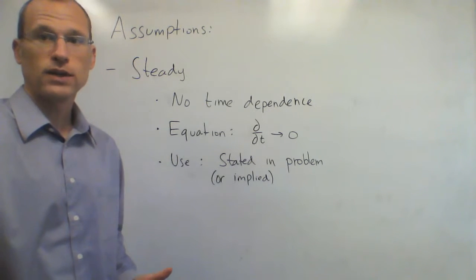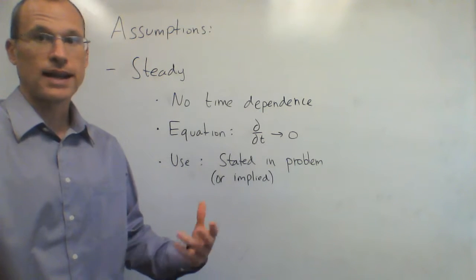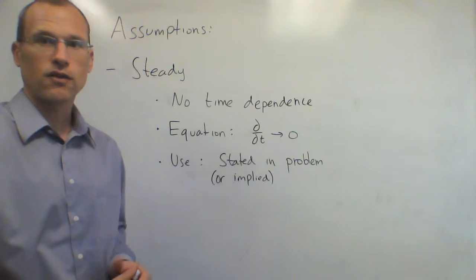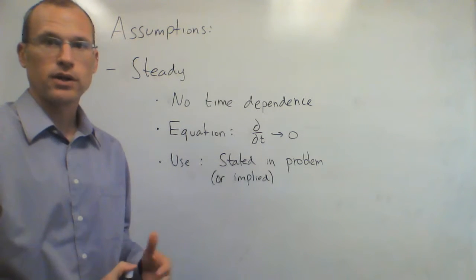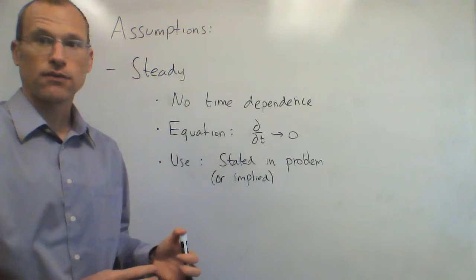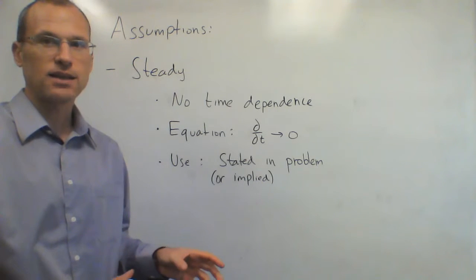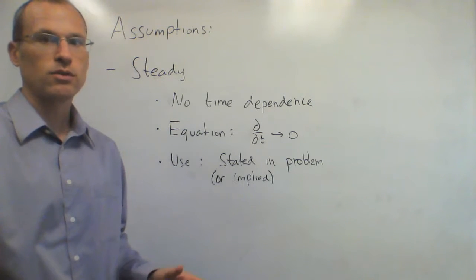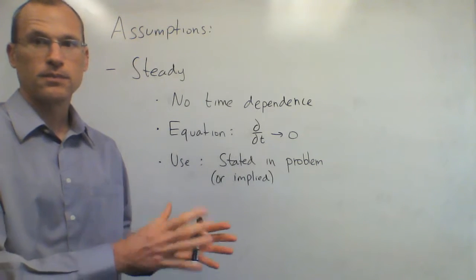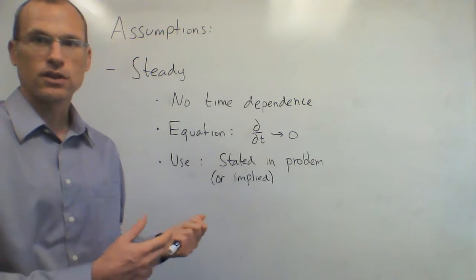The next assumption is if the flow is steady. Steady flow means no time dependence — the flow looks the same now as it will an hour from now. Mathematically, no time dependence means the time derivative goes to zero. So the d/dt term on the left-hand side of all the Navier-Stokes component equations vanishes. This is usually stated in the problem, but can also be implied by the scenario — if something runs for a very long time and reaches a steady state, you can eliminate those time derivatives.